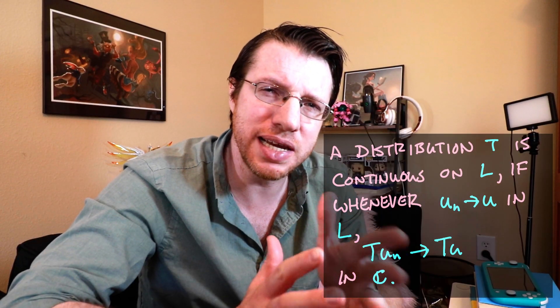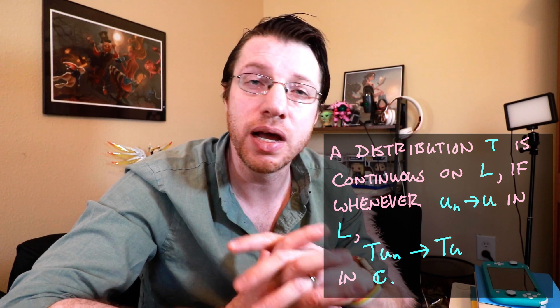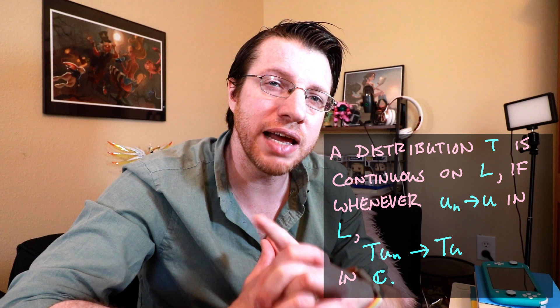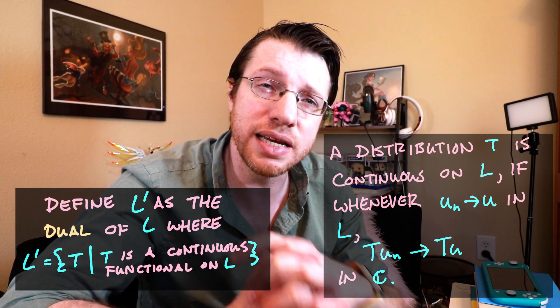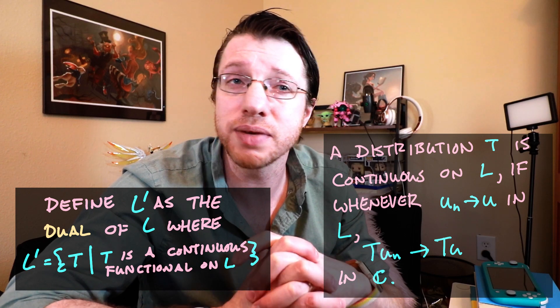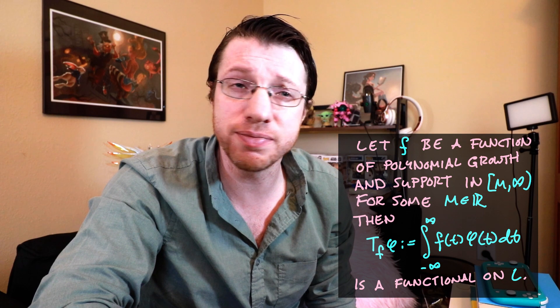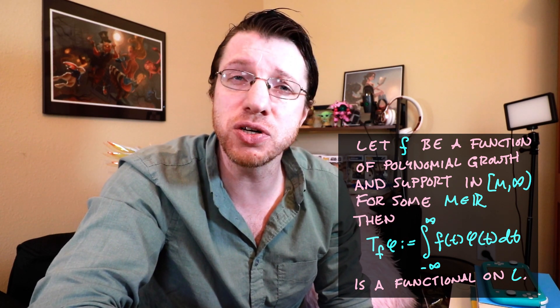We can also show that functionals mapping functions in L to the evaluation of their derivatives at the origin, or any other point, are continuous in the same manner. These actually turn out to be derivatives of the delta function in some generalized sense. If we take a functional T, which is a map from a vector space to the space of scalars, we say that a linear functional is continuous over L if whenever u_n converges to u in L, then T(u_n) converges to T(u) in C. While the delta function can't be represented by a function, many functionals can — we call these regular functionals. These manifest by taking a function f of polynomial growth and multiplying against a function in L.